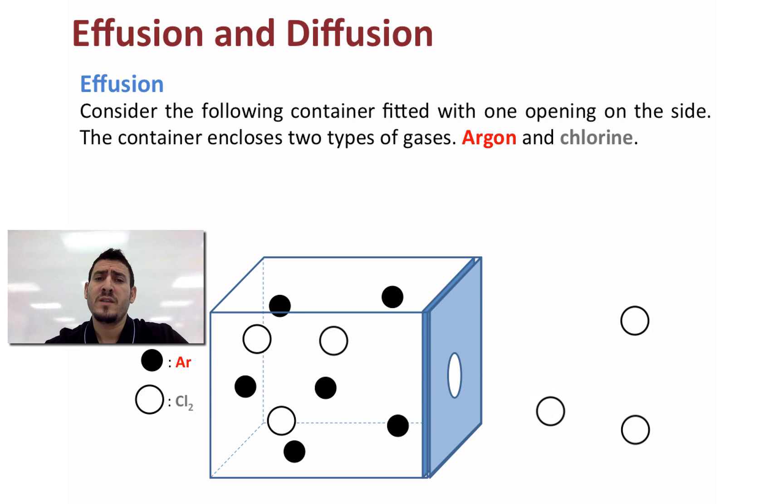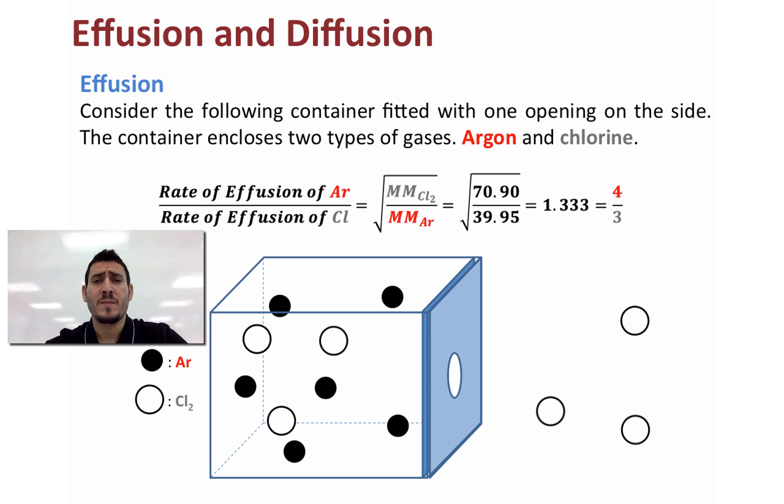Now in order to determine the number of argon particles that will escape the container we need to look up the ratio of the root mean square velocity of both gases. So the rate of effusion of argon divided by the rate of effusion of chlorine is going to be equal to the square root of the molar mass of chlorine divided by the molar mass of argon.